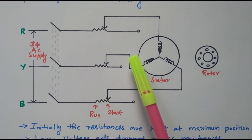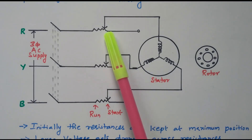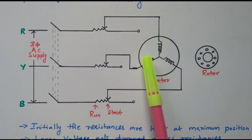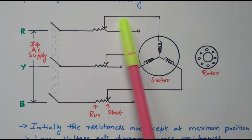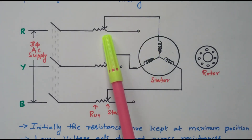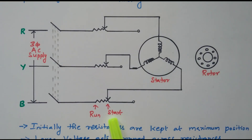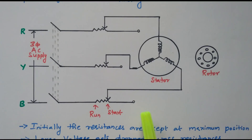At the starting position, the resistors are placed at the maximum resistance position so that the voltage is dropped across the resistors and only minimum voltage is applied to the stator. Due to the minimum voltage, the current taken by the stator is also reduced. After that, the resistance is gradually decreased by moving the position from the starting point toward the running position — that is, slowly reducing the resistance — so the voltage applied to the stator gradually increases and the current taken by the stator also gradually increases.